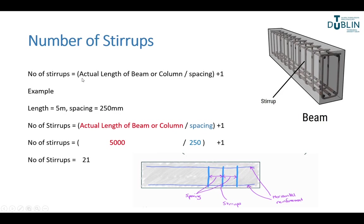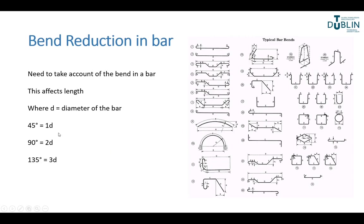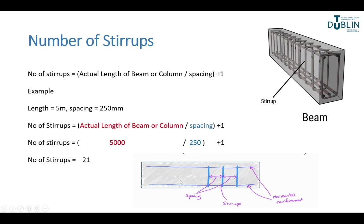Another thing in beams is stirrups — these are links. We can calculate the number required using a similar formula: actual length of the beam divided by the spacing plus one. For example, with a five-metre beam and spacing of 250mm, we convert to millimetres, divide by 250, add one, and we get 21 stirrups. So in a beam that's five metres with a spacing of 250mm, you will require 21 stirrups.